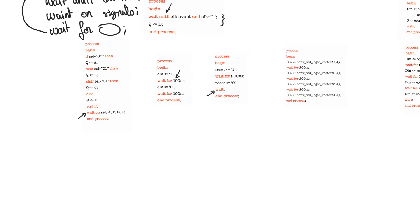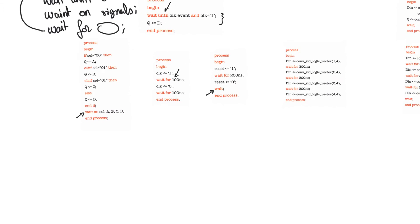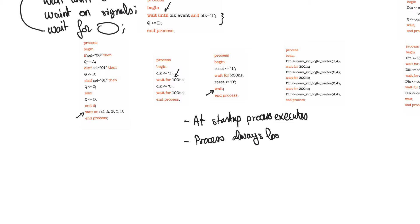There are a couple of rules to understand about how a process is executed, and it's much clearer using wait statements. Rule one: at startup, when the circuit first starts up, the process executes — it always executes at least once. Rule two: the process always loops. When it reaches the end process statement, it goes back to the process statement and executes again. These are the two rules you have to know.